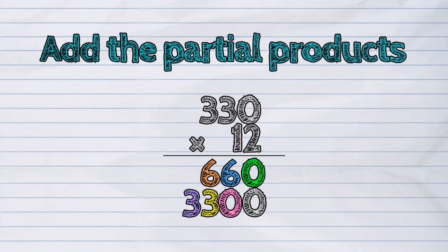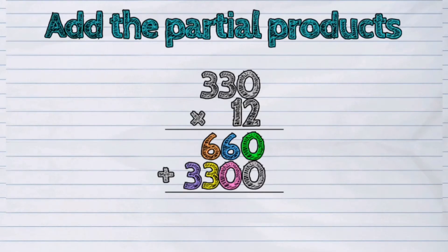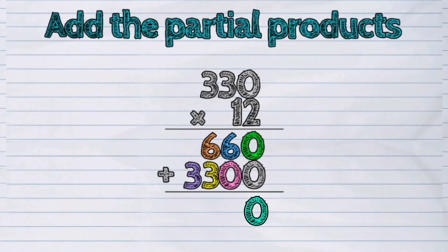Let's add the partial products. 660 plus 3,300. 0 plus 0 is 0. 6 plus 0 is 6. 6 plus 3 is 9.